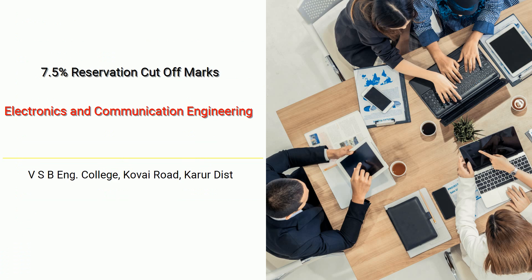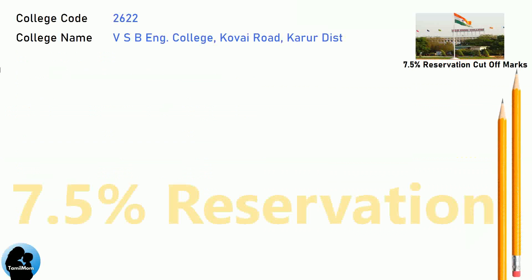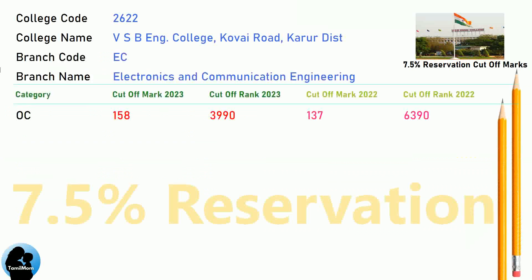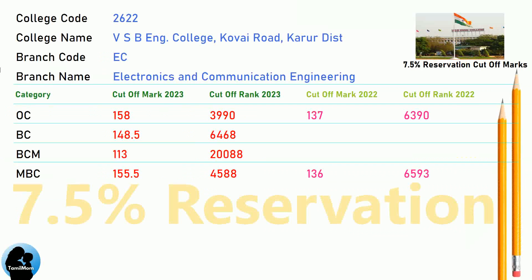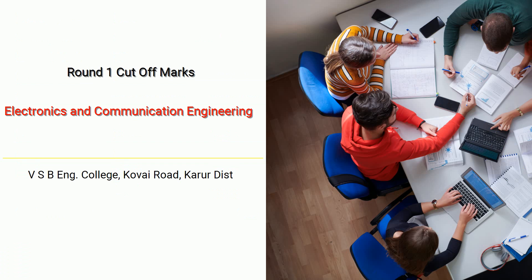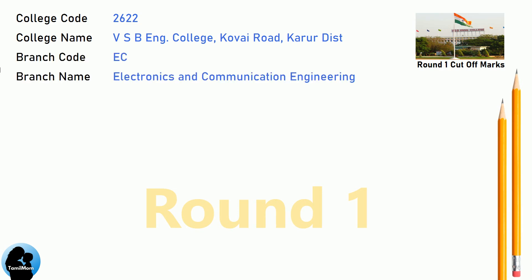DNA 7.5 Reservation Cut-Off for VSB Engineering College in Electronics and Communication Engineering. DNA Round 1 Cut-Off for VSB Engineering College in Electronics and Communication Engineering.